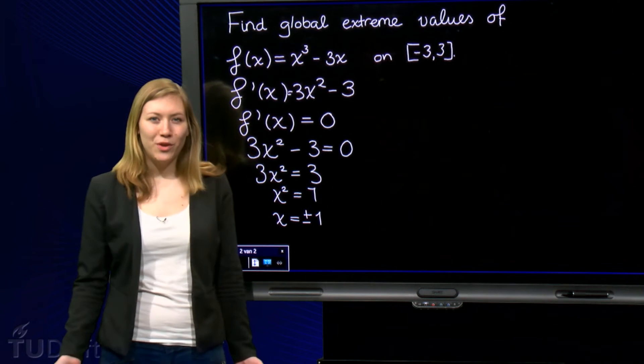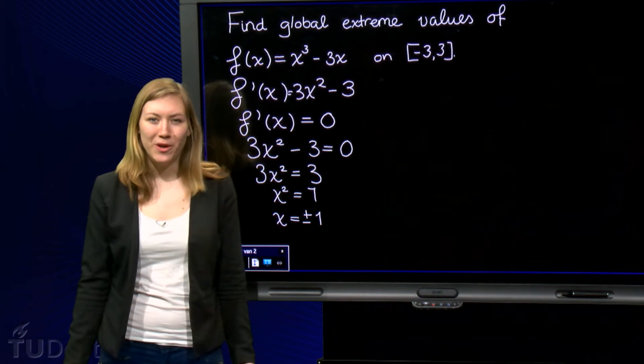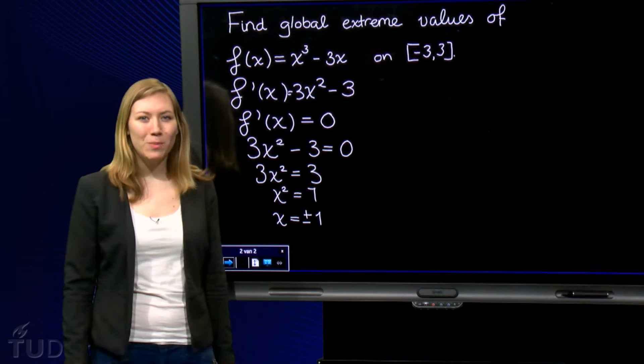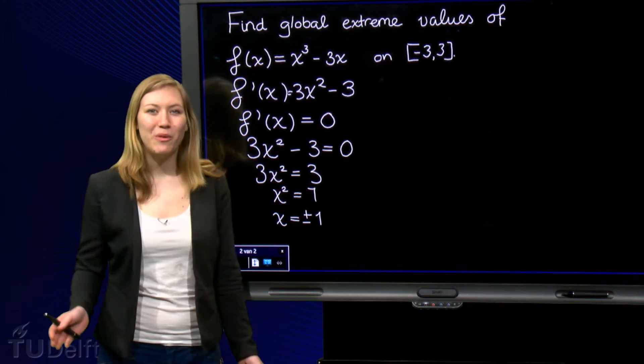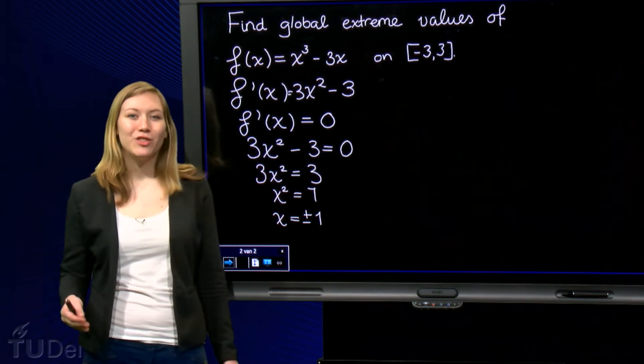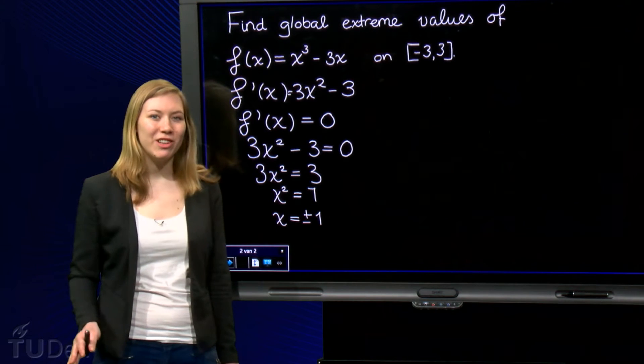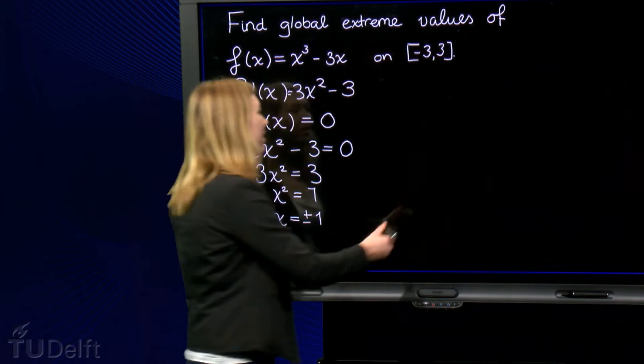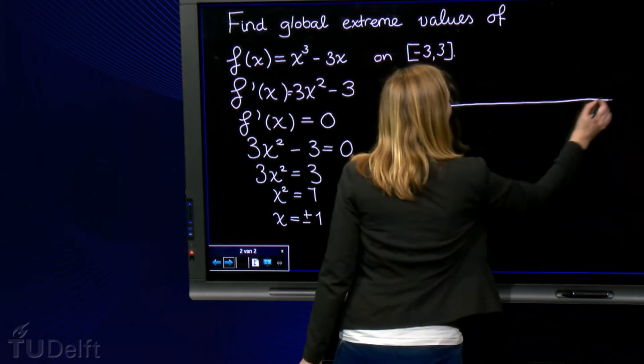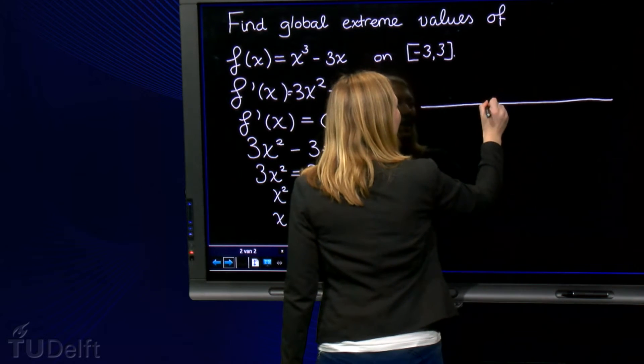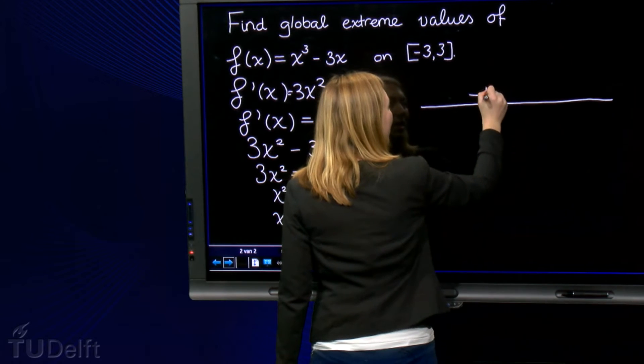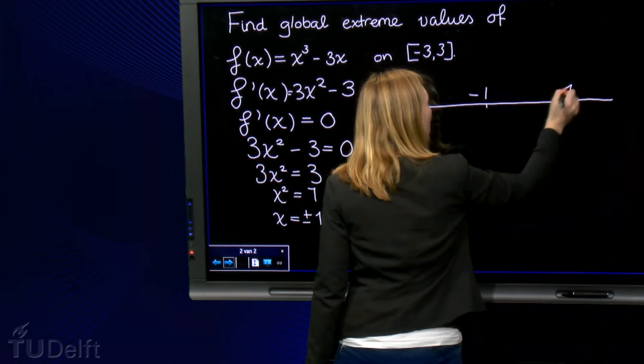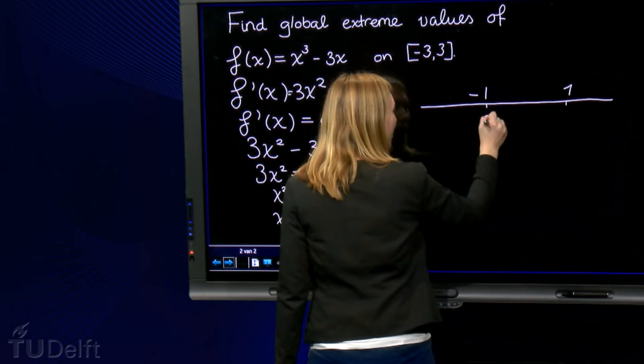Okay, so let's see if these points correspond to minimum or maximum values of f. We can do this by making a number line of the derivative of f to see if the function is increasing or decreasing around our critical points. So we make a number line, where we set minus 1 and 1, where the derivative equals 0.